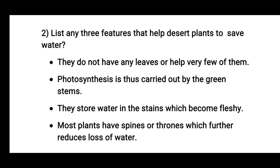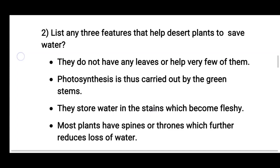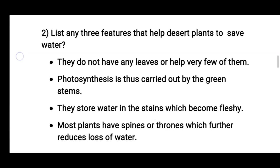They do not have any leaves, or maybe very few of them. Second one is, photosynthesis is thus carried out by the green stems. The photosynthesis process is carried out by the green stems. Then they store water in the stems, which become fleshy. And the last one is, most plants have spines or thorns which further reduce the loss of water.